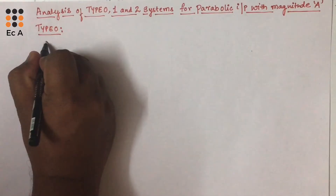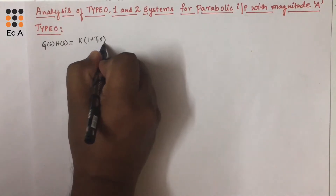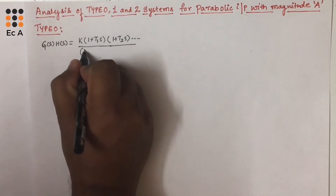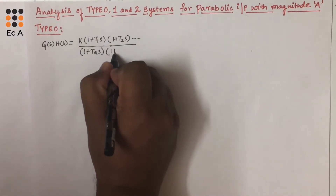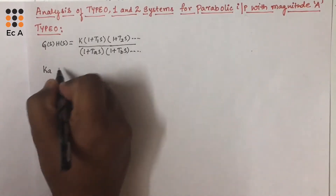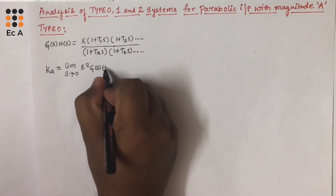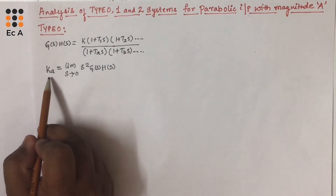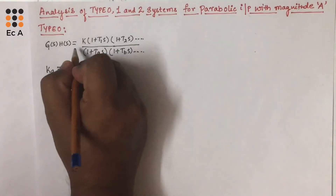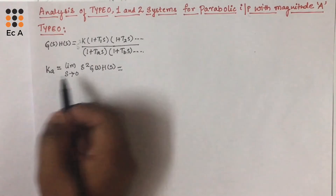We can represent type 0 system as G(S)·H(S) = K · (1 + T1·S)(1 + T2·S) · ... / (1 + T_A·S)(1 + T_B·S) · ... We know the acceleration error coefficient Ka is given as the limit as S tends to 0 of S² · G(S)·H(S). To find Ka, we multiply G(S)·H(S) by S² and apply the limit S = 0. If we do so, this term will become 0.